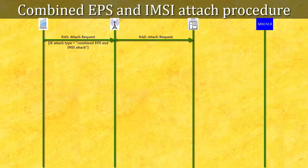Interestingly, at this moment UE does not know anything about the network's capability related to CSFB. It may happen that network does not support CSFB but it supports SMS. In this case, network will add one optional IE called Additional Update Type in the attach accept message and set the value as SMS only. In this case, although UE is registered to CS domain, it can exchange only SMS — no voice call facility will be available.